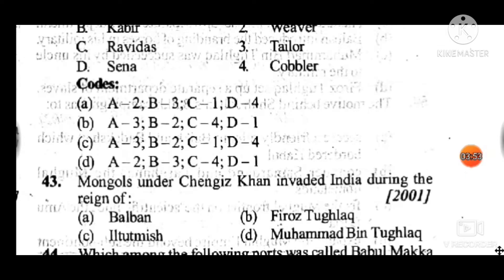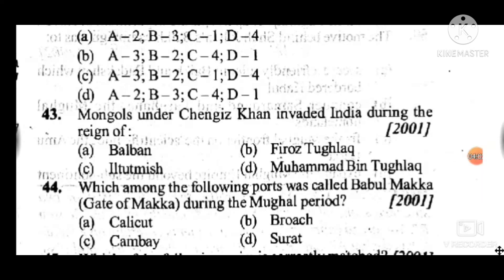Question 43: Mongols under Chengiz Khan invaded India during the reign of — answer to question 43 is C: Iltutmish. Question 44: Who among the following ports was called Babul Makkah (Gate of Makkah) during the Mughal period? Answer to question 44 is D: Surat. Question 45: Which of the following pairs is correctly matched? Answer to question 45 is A: Diwan-i-Bandagan — it was established by Tughlaq.